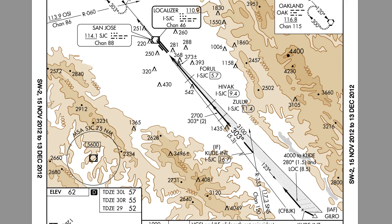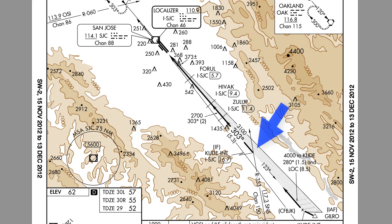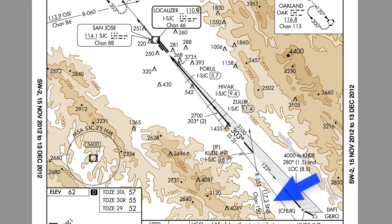Other things you may see on the plan view of an approach procedure are instructions such as to maintain 4,000 feet to Clyde intersection, as noted on this chart. If an intersection is depicted, the crossing radials defining that intersection are shown as a light solid line and include the frequency and identifier of the station which creates the radial, and the radial degrees itself.